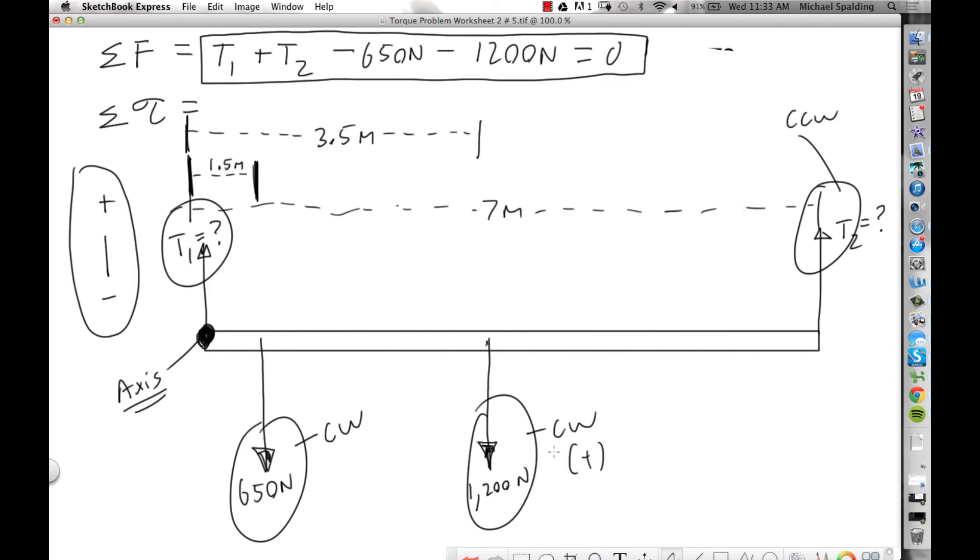All right, this force over here is pulling which way? Pulling counterclockwise. So let's say that clockwise is plus, counterclockwise is minus. All right, so summing the torques, I'm going to squeeze it up here. Let's start with our positive one, so we're going to go 650. What's the distance for the 650? 1.5. Are they perpendicular to each other? Yes. Okay, plus 1200. What's the distance out to the 1200? 3.5. Are they perpendicular? Yep.